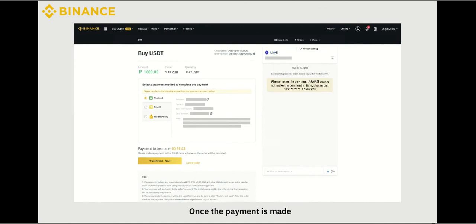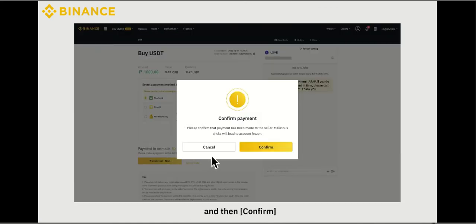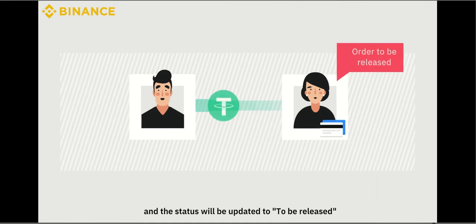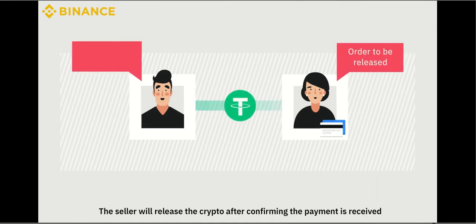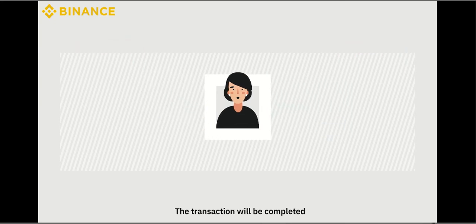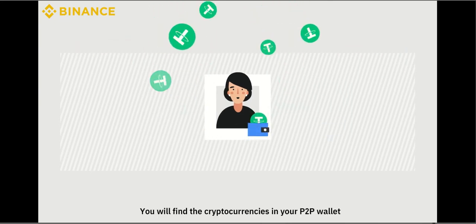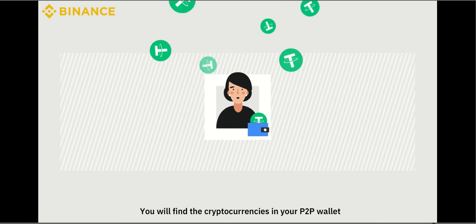Once the payment is made, click Transferred Next and then Confirm. The status will be updated to To Be Released. The seller will release the crypto after confirming the payment is received. The transaction will be completed and you will find the cryptocurrencies in your P2P wallet.